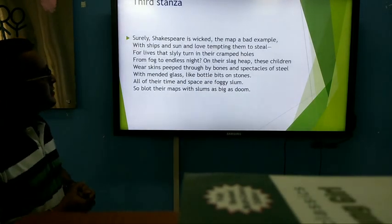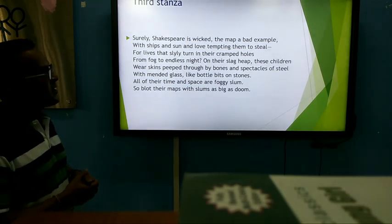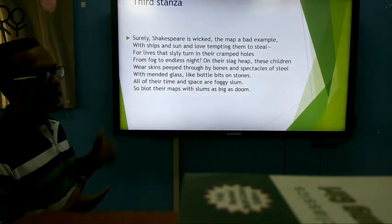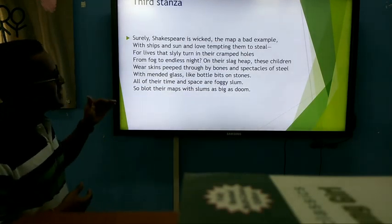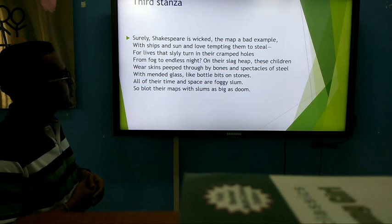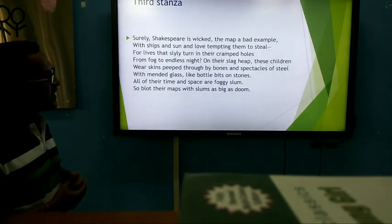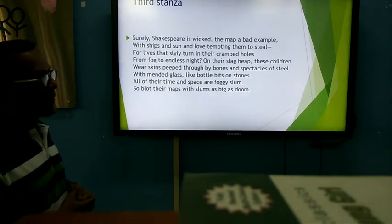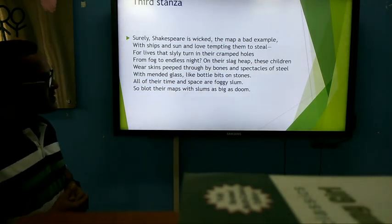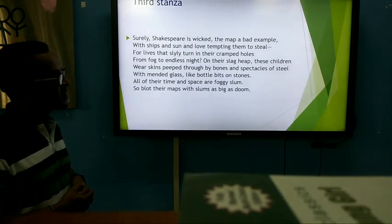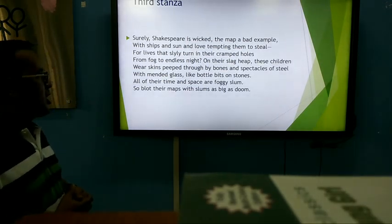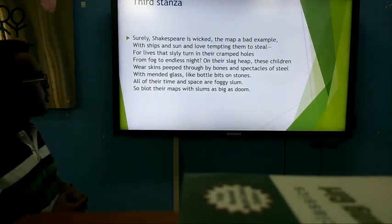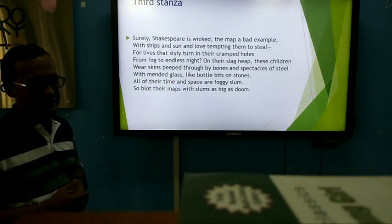Third stanza: 'Surely, Shakespeare is wicked, the map a bad example, with ships and sun and love tempting them to steal, for lives that slyly turn in their cramped holes from fog to any less light. On their slag heap, these children wear skins peeped through by bones, and spectacles of steel with mended glass like bottle bits on stones. All of their time and space are foggy slums, so blot their maps with slums as big as doom.'